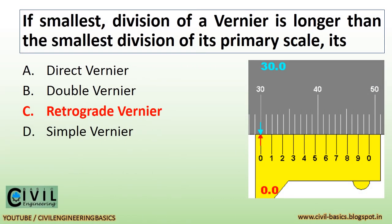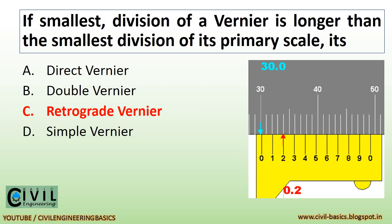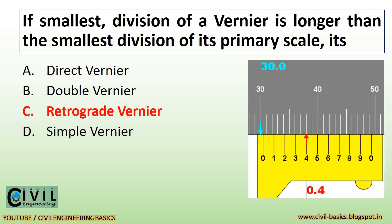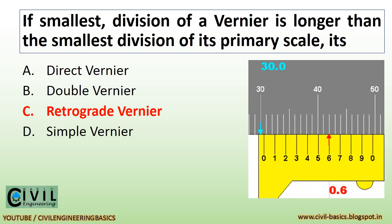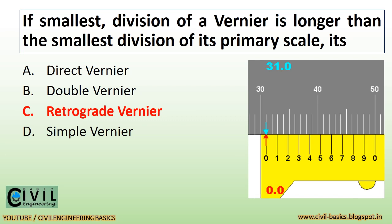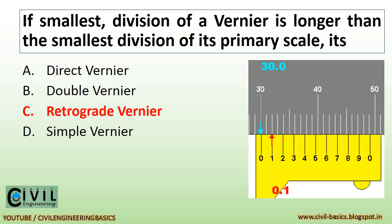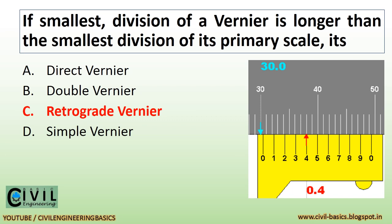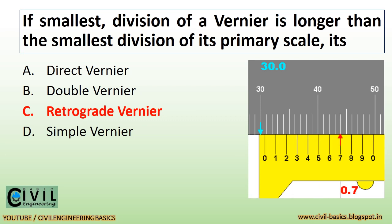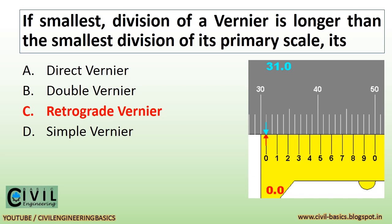If the smallest division of a vernier is longer than the smallest division of its primary scale, it is called a retrograde vernier.